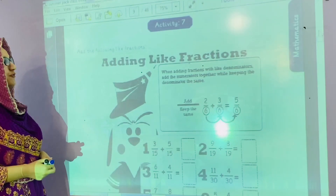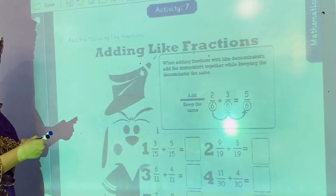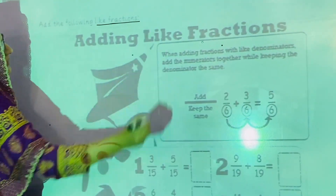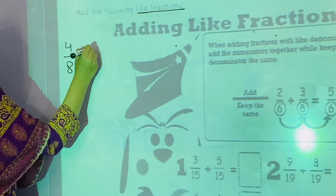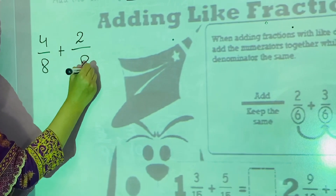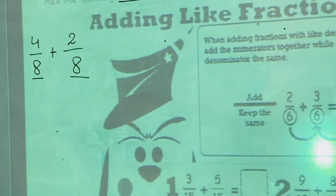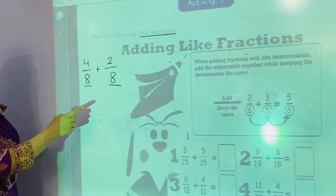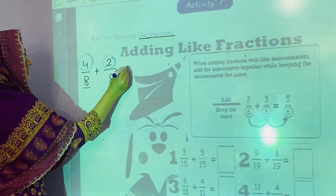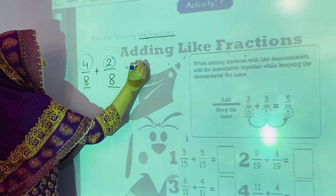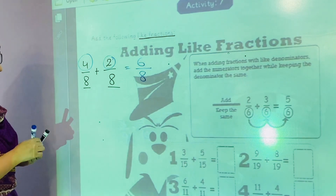Now we are going to start activity number 7: add the following like fractions. The first question in your mind is: what are like fractions? As you can see, 4 by 8 plus 2 by 8 — fractions that have the same denominator are called like fractions. In like fractions we just add the numerators, and the denominator is written as it is.